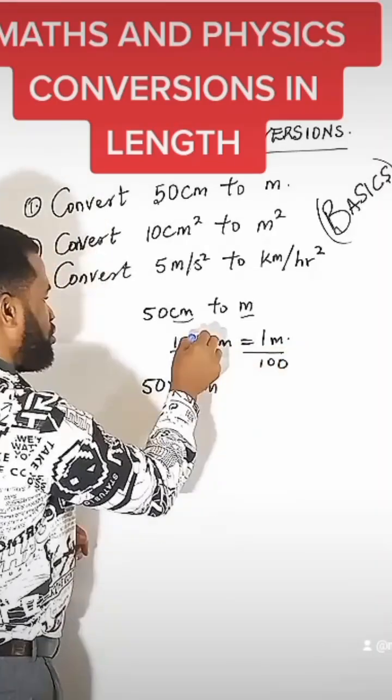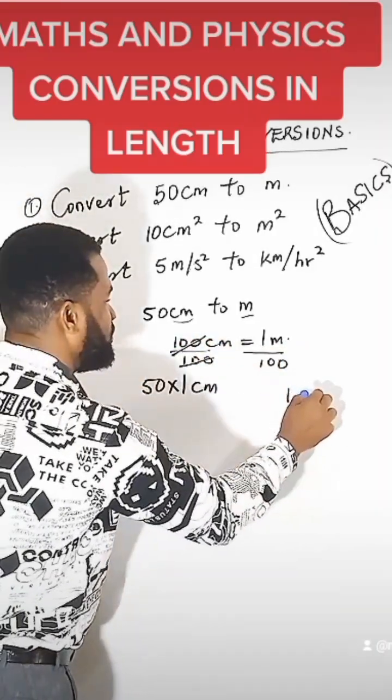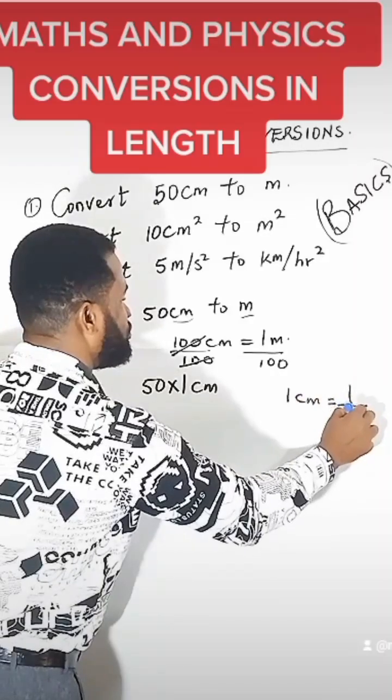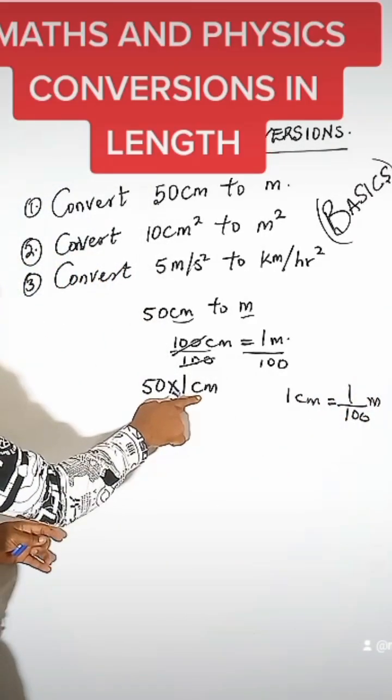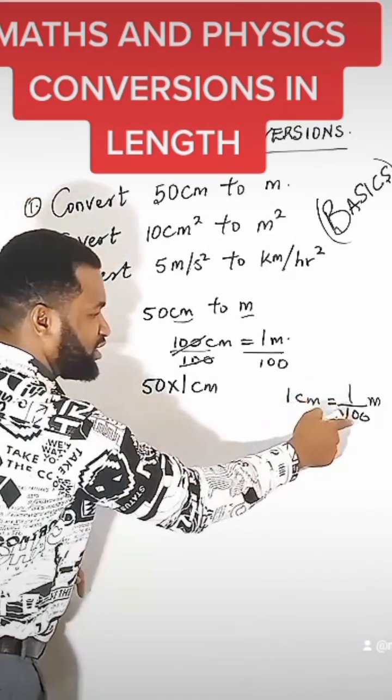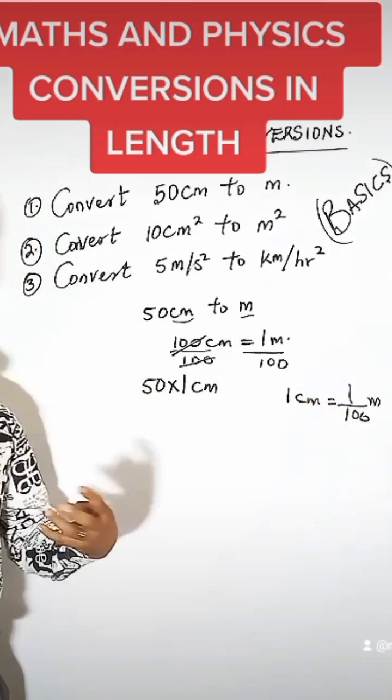Divide this by 100. We divide by 100, so I have 1 cm is something as 1 over 100 meters. Right, so in place of 1 cm, I'm going to put 1 over 100 meters.